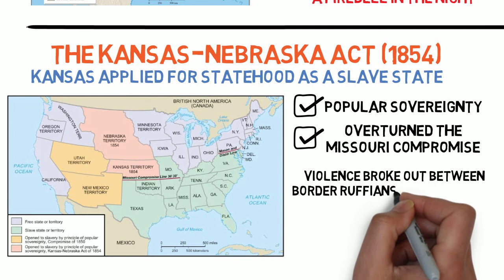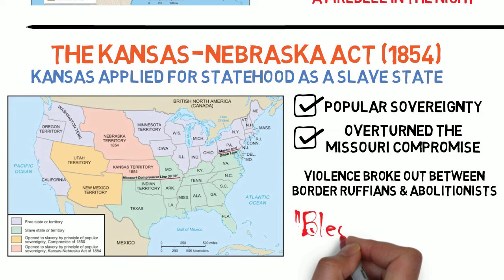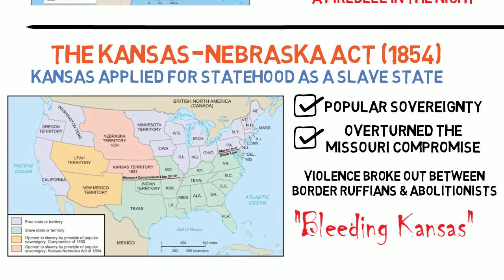What happened next was chaos. Both abolitionists, armed with rifles, and pro-slavery border ruffians from Missouri flooded into Kansas intent on swaying the referendum. Violence between the two groups soon broke out, and Kansas was nicknamed Bleeding Kansas. By the time the violence ended in 1859, over 50 had died as a result. In many ways, what happened in Kansas would be a small precursor to what would take place in the near future.